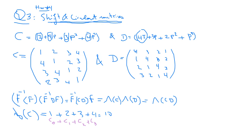The next eigenvalue: lambda 1 of C is going to be equal to C0 plus C1·W plus C2·W squared plus C3·W cubed. So it is equal to 1 plus 2W plus 3W squared plus 4W cubed.